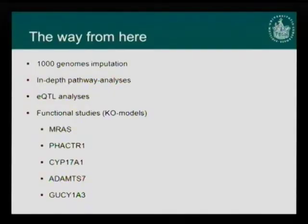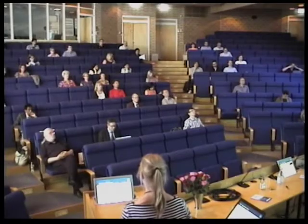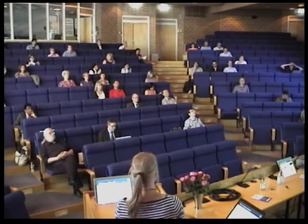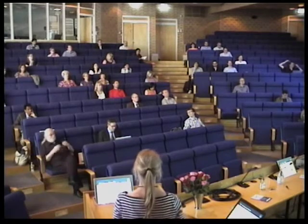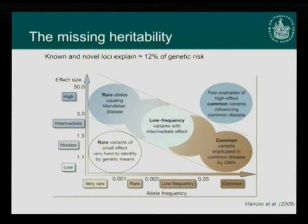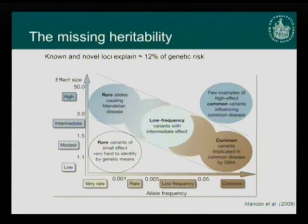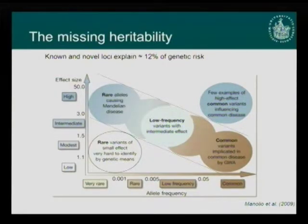Let me come back to the so-called missing heritability — the fact that only 12% of the genetic risk is explained. In this standard diagram, the y-axis shows effect size and the x-axis shows variant frequency. GWAS has identified variants on the right side: common variants with low effect size. We don't really expect to find additional CAD variants there, so we need to move toward the left — towards lower frequency variants.